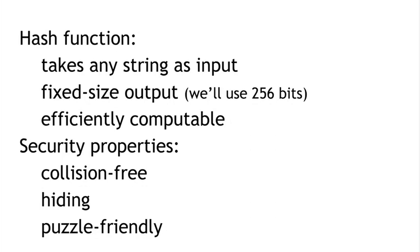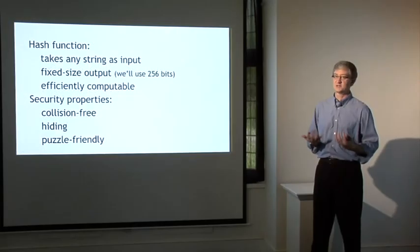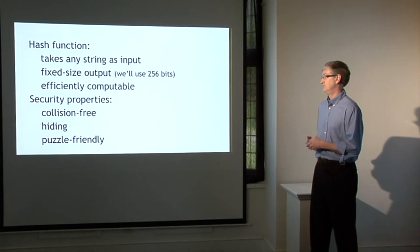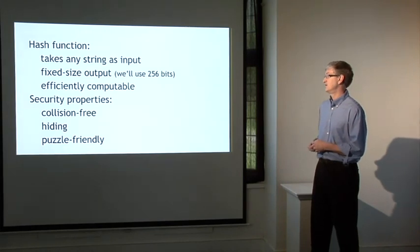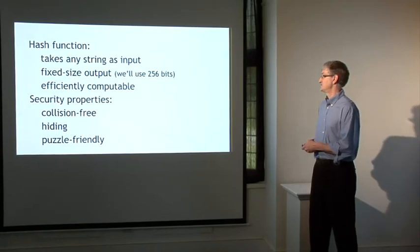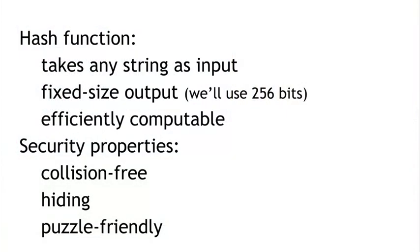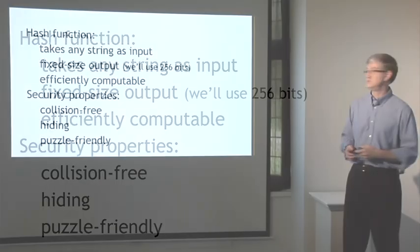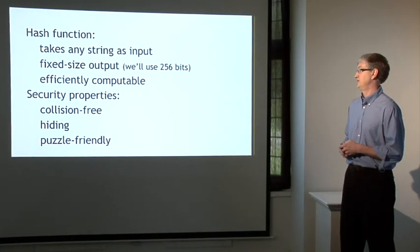That's a hash function, but we're going to need hash functions that are cryptographically secure. The cryptographic properties of hash functions are a complicated topic in general, but we're going to focus here on three particular properties. In particular, that the function is collision-free, that it has a hiding property, and that it's puzzle-friendly. For each of these, I'll talk about what the property is, what it means, and then I'll talk about why it's useful to have a function that has that property.